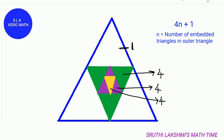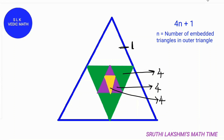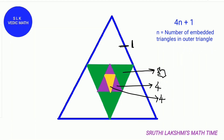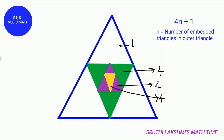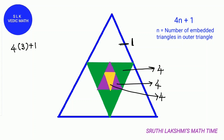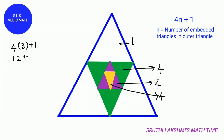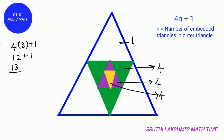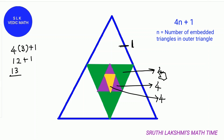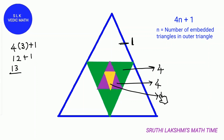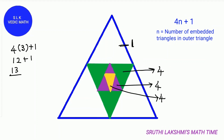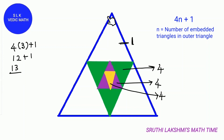The formula is 4n plus 1, where n is the number of Embedded Triangles in the outer triangle. There are 3 Embedded Triangles, so we do 4 times 3 plus 1. 4 times 3 is 12, and 12 plus 1 is 13. So there are 13 triangles in this big triangle. We could also do it like this: 4 plus 4 is 8, and 8 plus 4 is 12, and 12 plus 1 is 13. So there are 13 triangles in this big triangle.